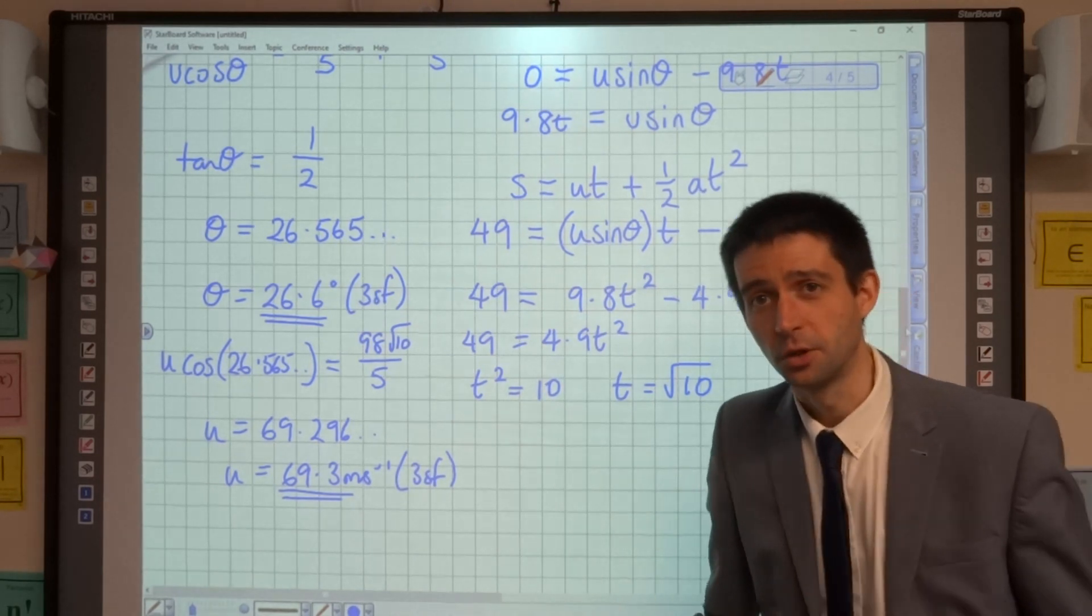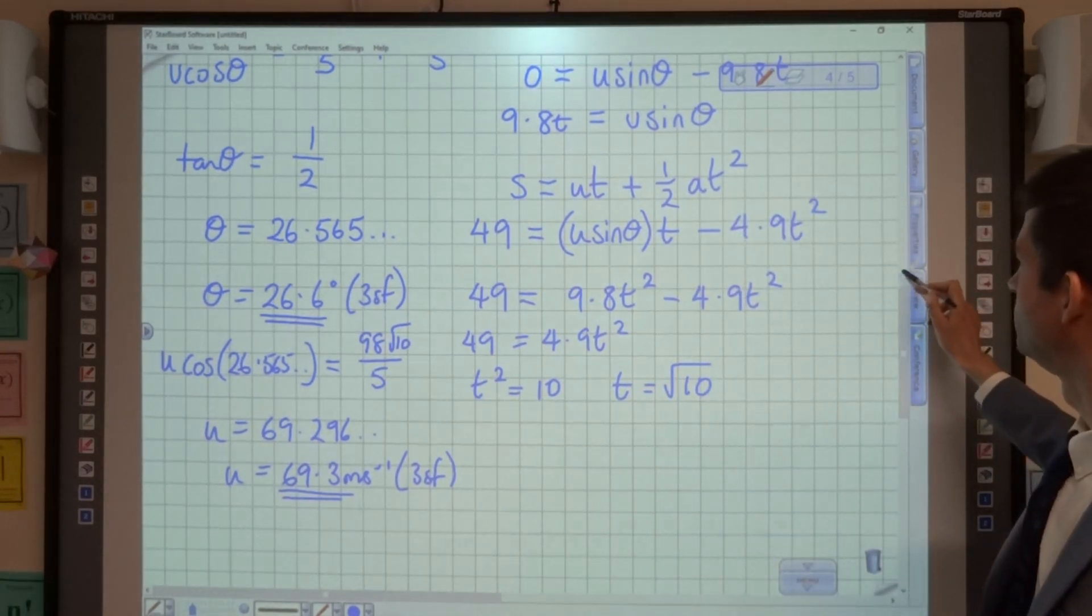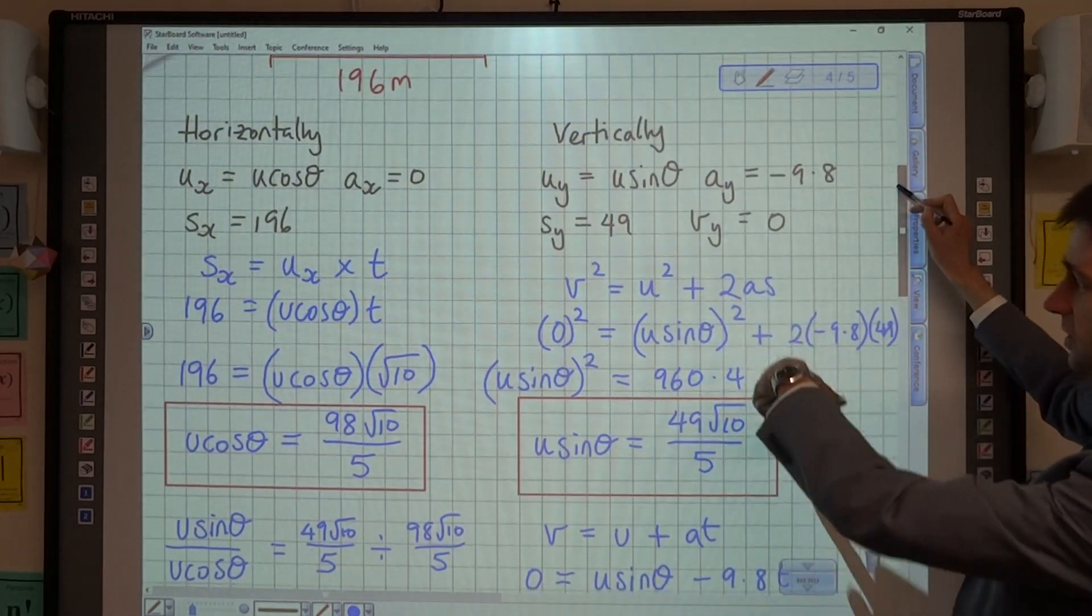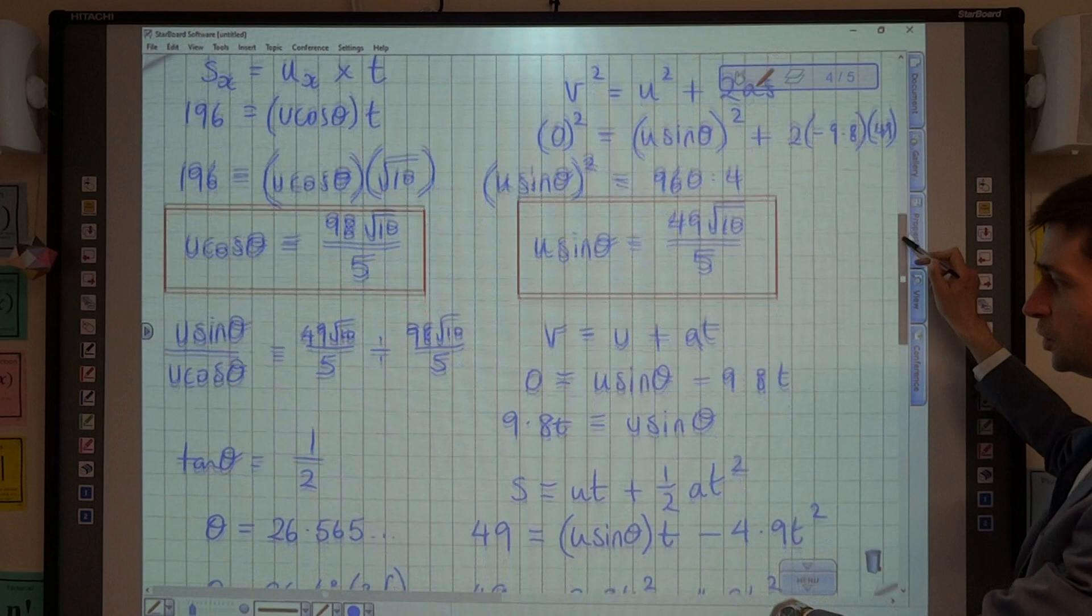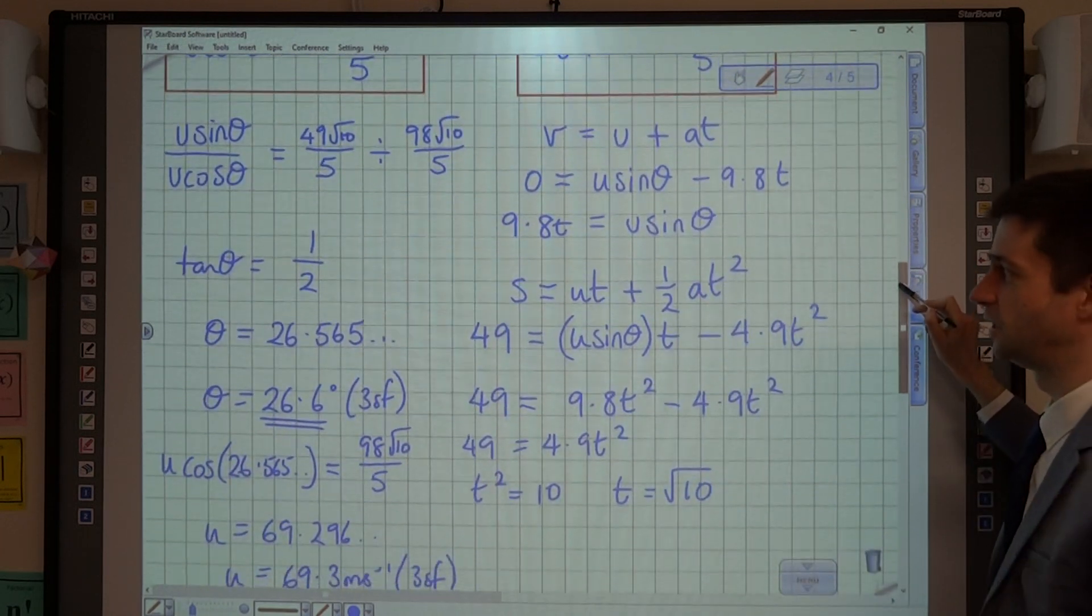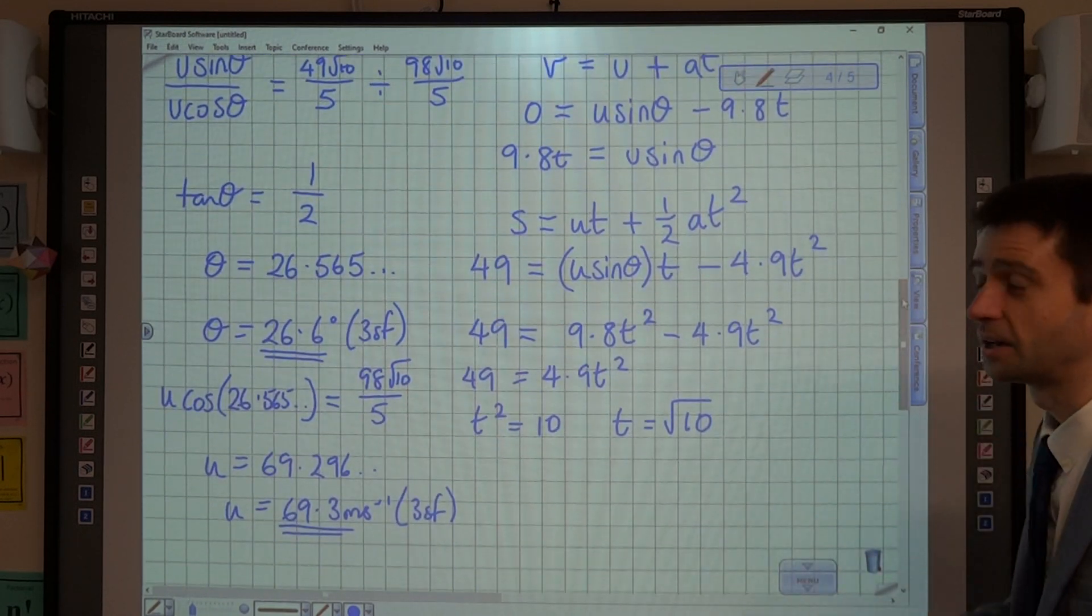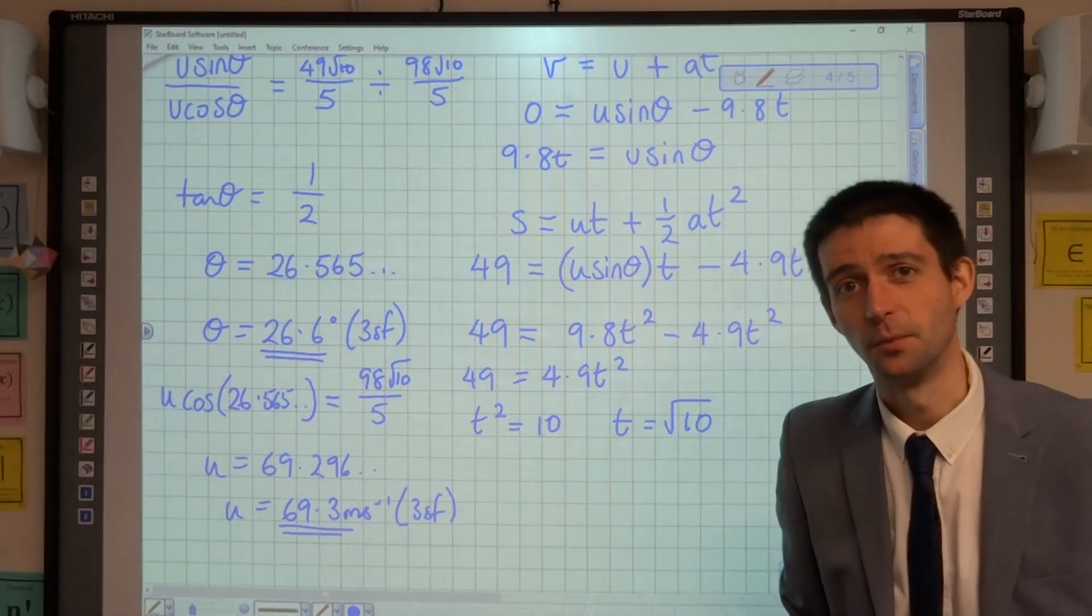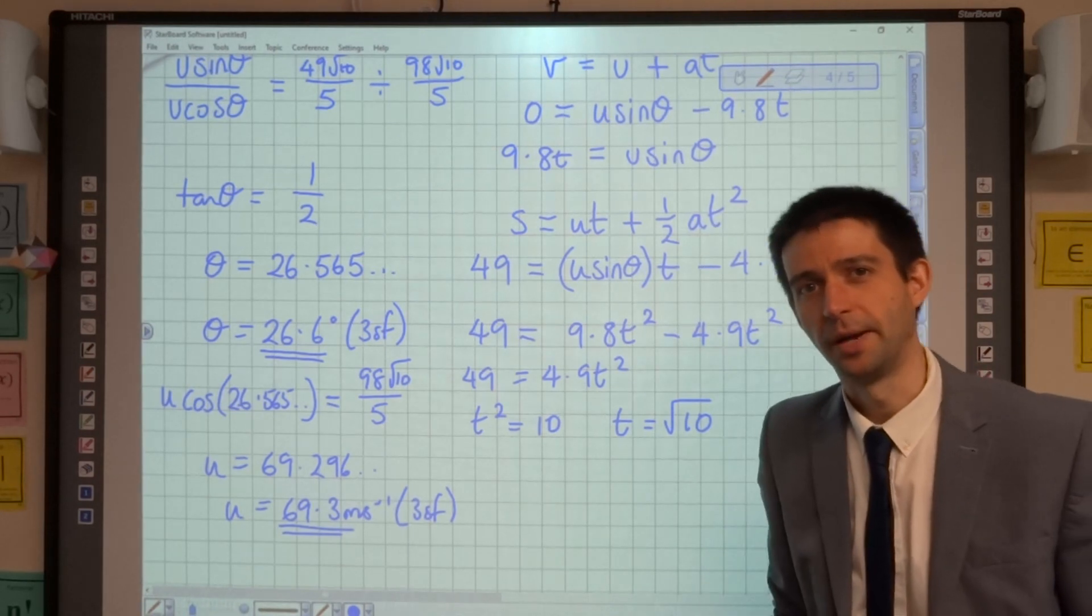And if you're not sure what to do, that's got to be the strategy. Look at what I've done. I've used pretty much all the Suvats vertically. I started off using v squared equals u squared plus 2as. I used v equals u plus at. I used s equals ut plus a half at squared. And every one of them was useful in its own way. Thanks for sticking with it. See you again.